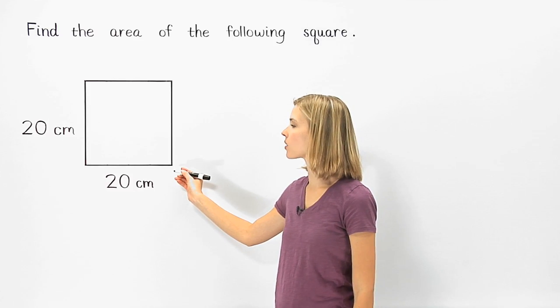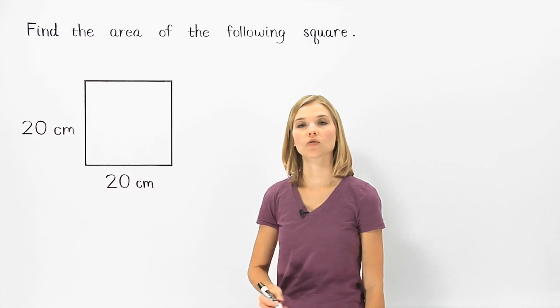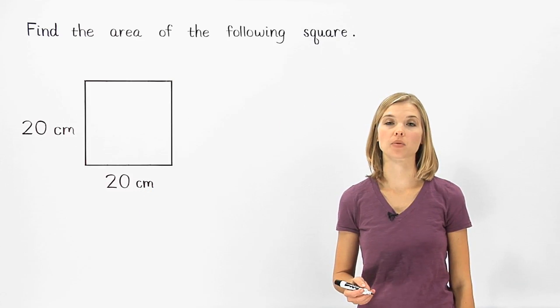The figure shown here is a square with sides that each have a length of twenty centimeters. To find its area, notice that a square is a type of rectangle.